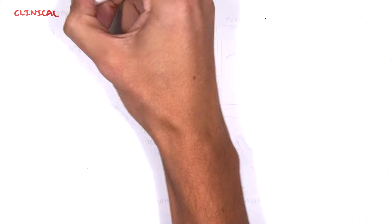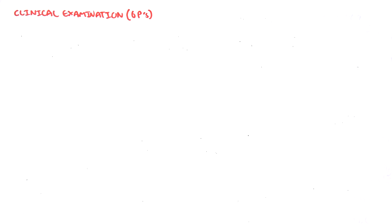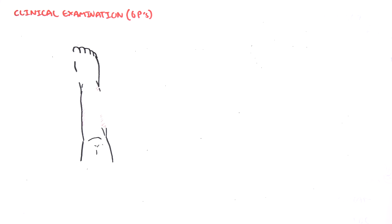What is more important is the clinical findings. History and examination is very important for acute compartment syndrome. Examination involves looking at the six P's.